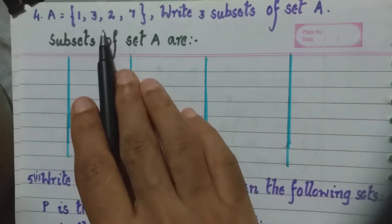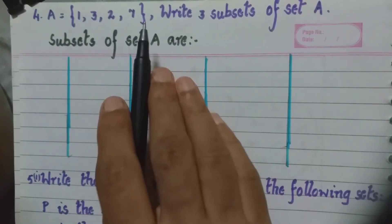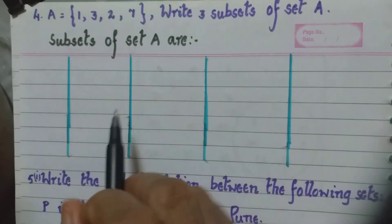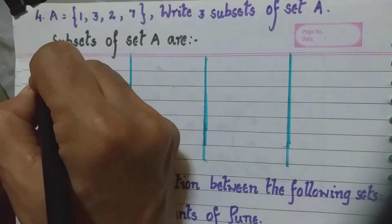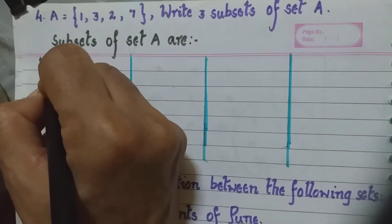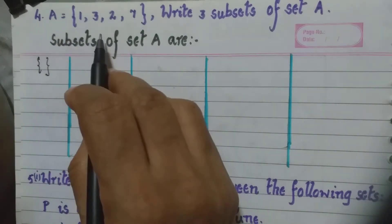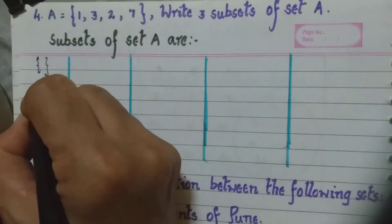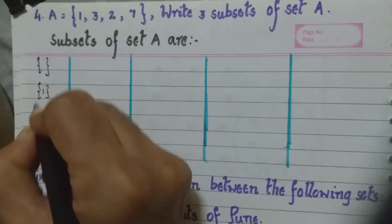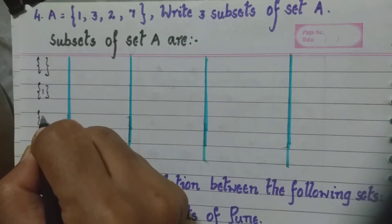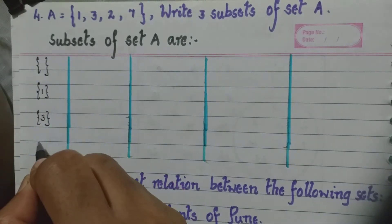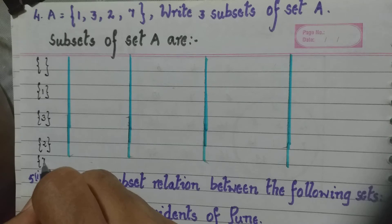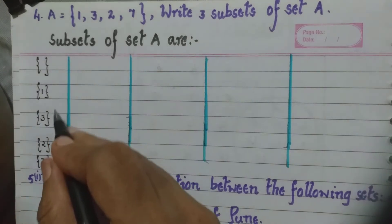When we say subsets, it means they should be parts of set A. Even an empty set is a subset of A, so we can write first of all an empty set with no elements in it. Then subsets with only one element — that is either 1, 3, 2, or 7. So all these are subsets.